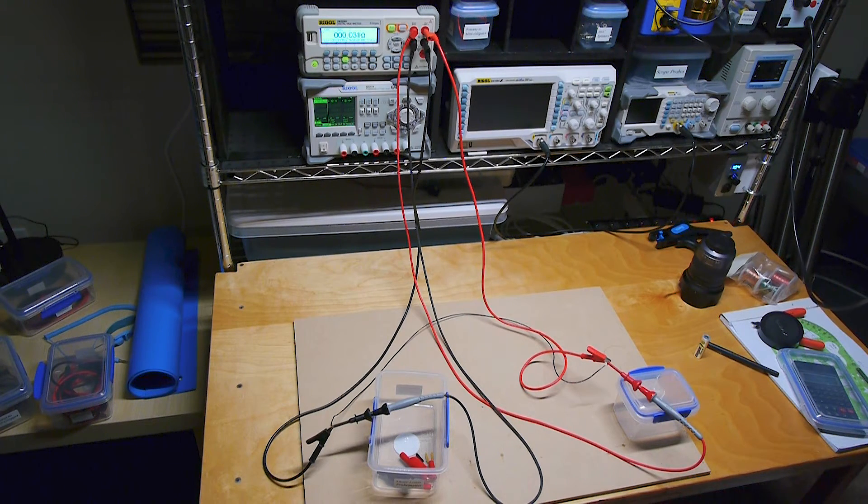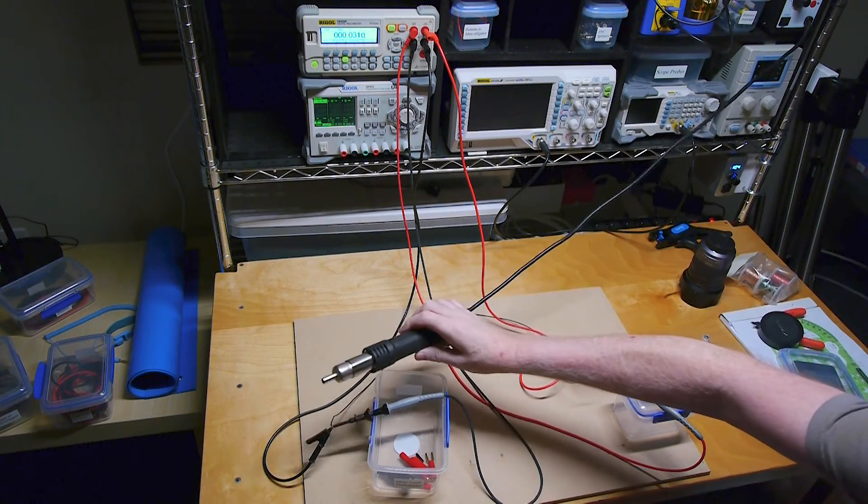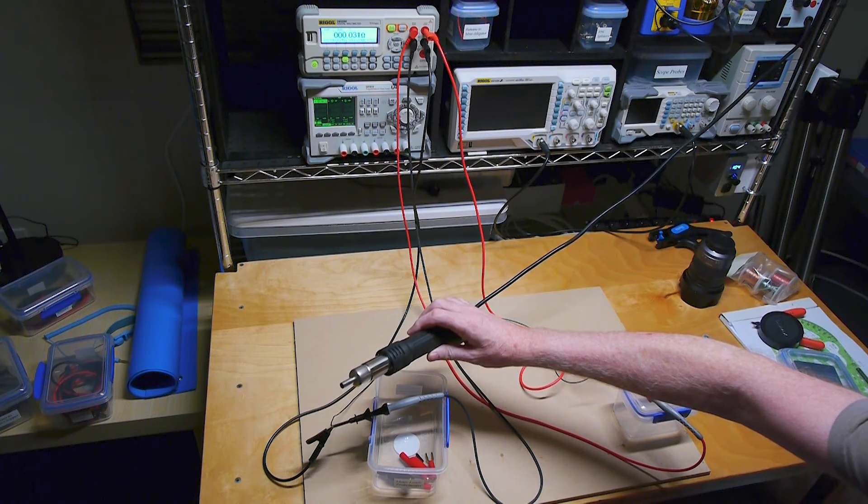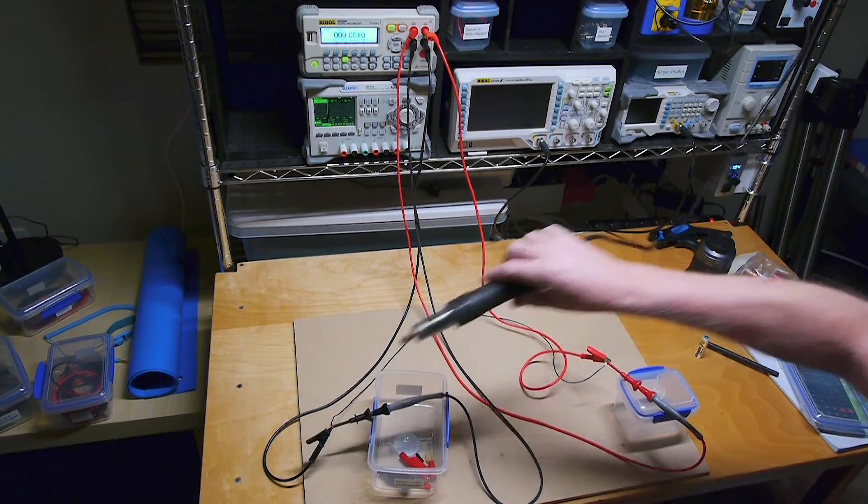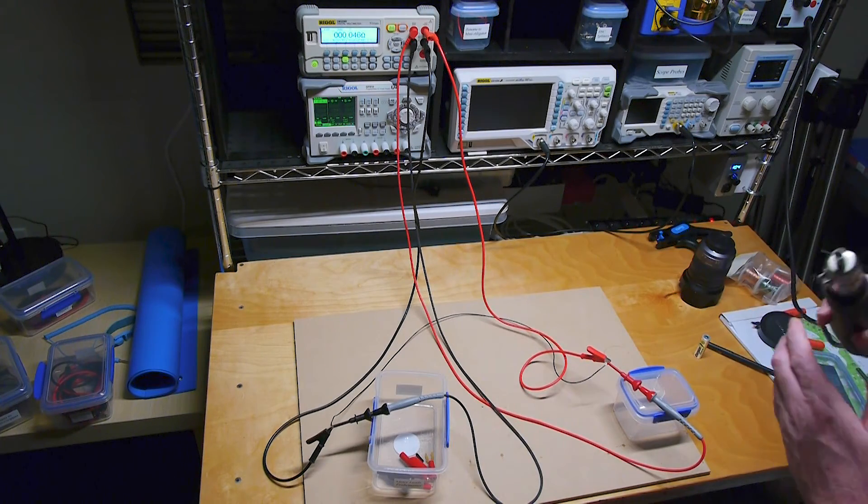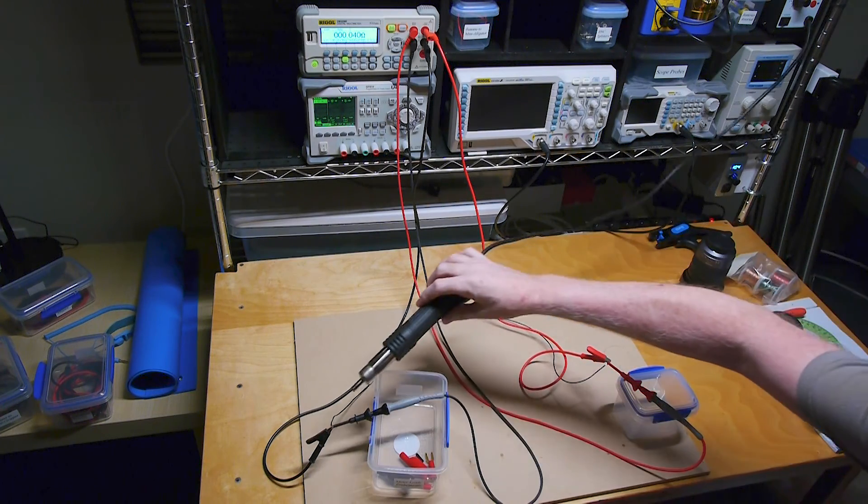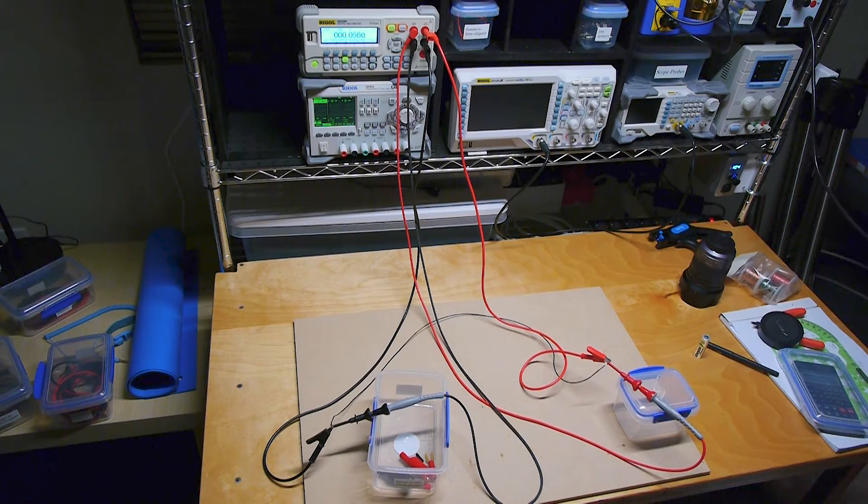Let me bring the heat gun close to the negative connection but not blow on it. So again, the resistance hasn't changed. But watch when I blow on it. Okay? Up beyond 50 milliohms. And I don't want to hold it on there too long and overheat the joint and cause any problems with the plastic. But look at that. Almost 70 milliohms.